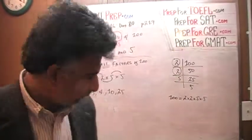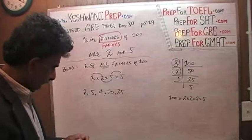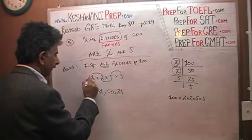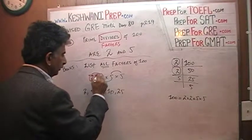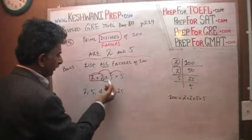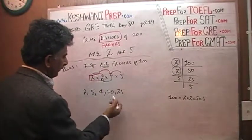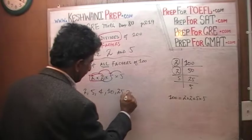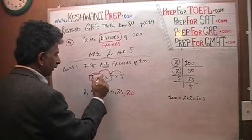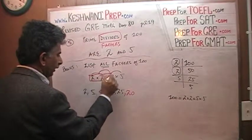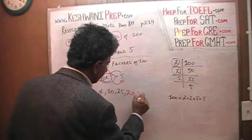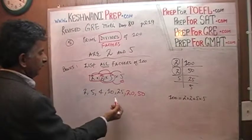Now let's do a pair with a single. Here's 2 times 2 times 5: 2 times 2 is 4, times 5 is 20. Similarly, here we have 2 times 5 which is 10, times 5 which gives us 50.